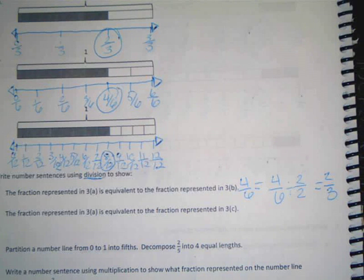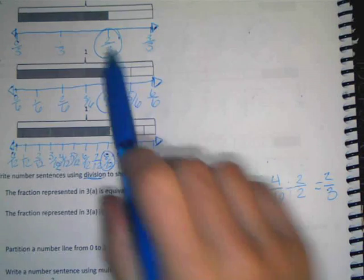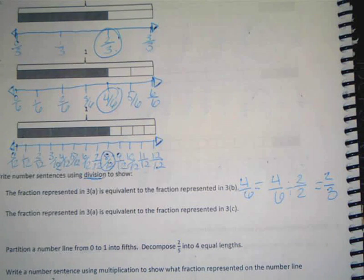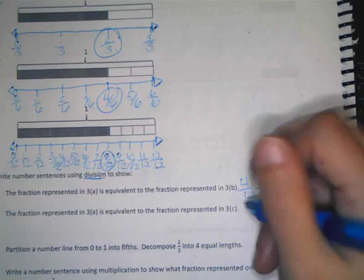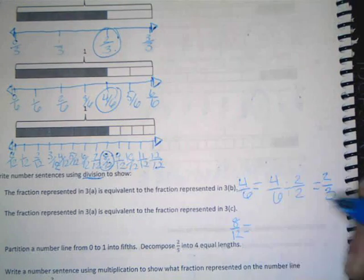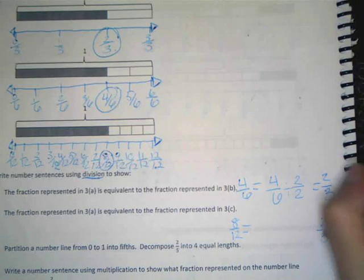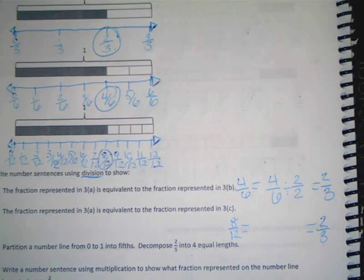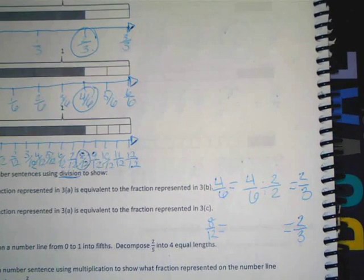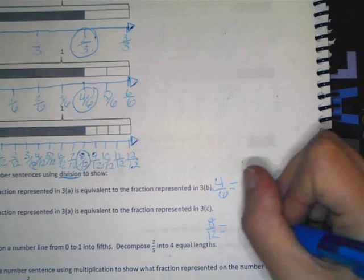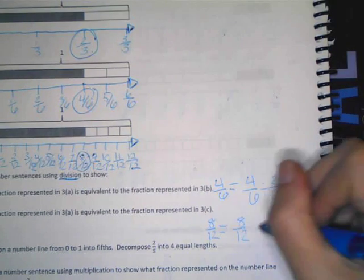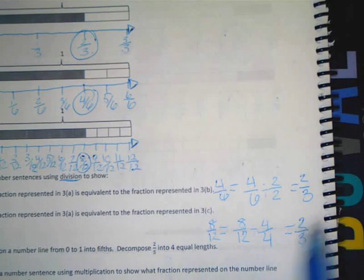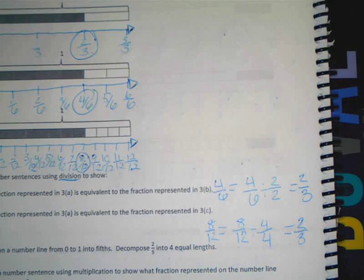Alright, what about B? The fraction represented in 3A, which is two thirds, is equivalent to the fraction represented in 3C, which is eight twelfths. Which one will I start with? Eight twelfths. So I like to put my eight twelfths on the end and my ending fraction, which is two thirds, on the other end. What happens from here to here? How can I prove that those two are equal? L? Eight twelfths divided by four? Yeah? So eight divided by four is two, twelve divided by four is three. Does that prove it? It sure does.